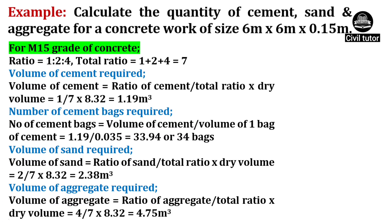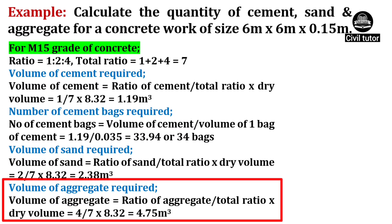The volume of aggregates will be equal to ratio of aggregate upon total ratio, multiplied by dry volume. Ratio of aggregates is 4, total ratio is 7 and dry volume is 8.32. So on substituting these values, volume of aggregates required will be equal to 4.75m³.